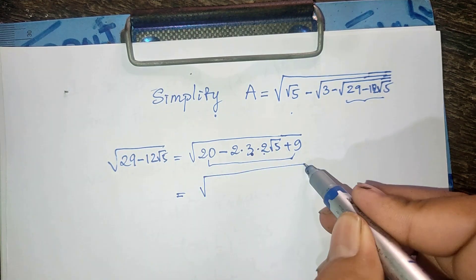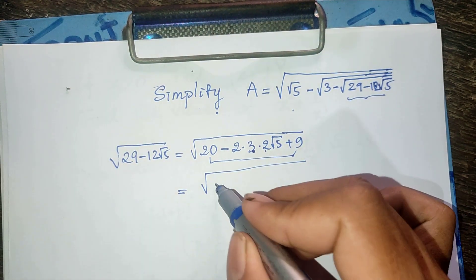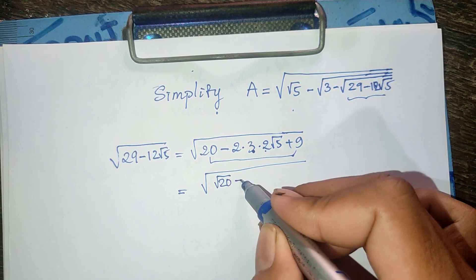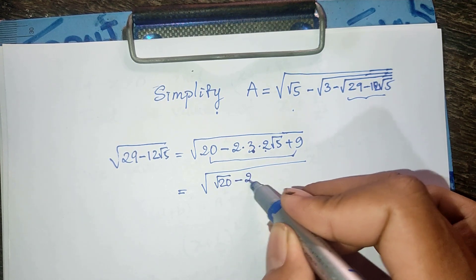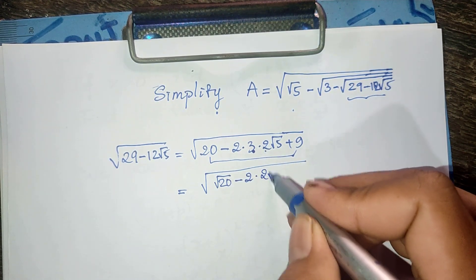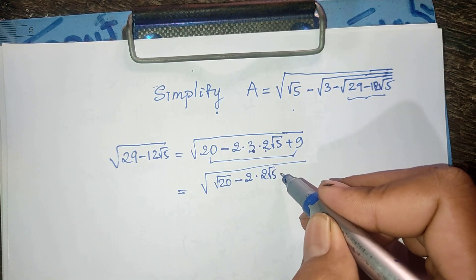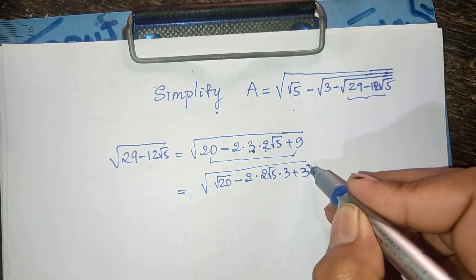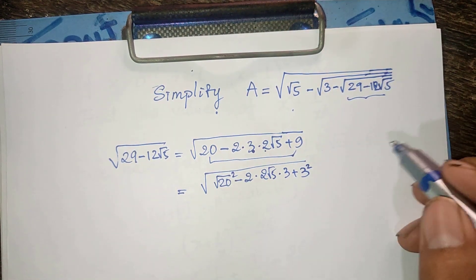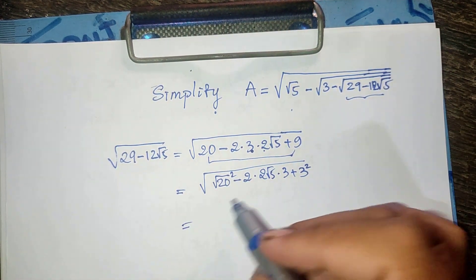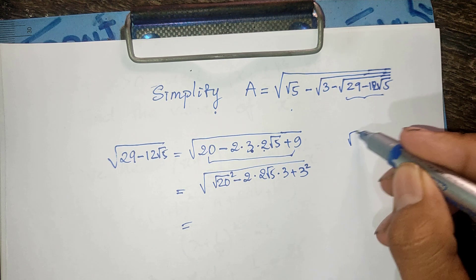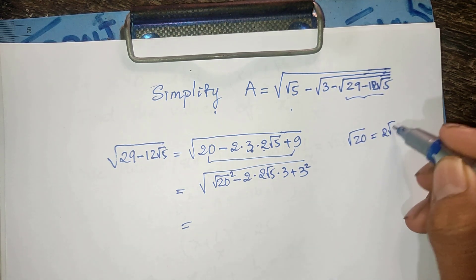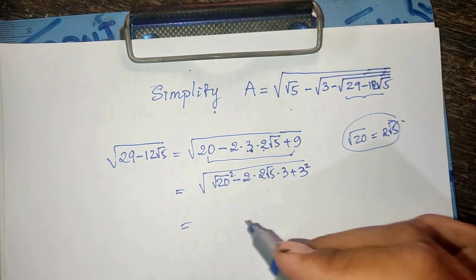I can write it equals square root of 20 minus 2 times 2 square root of 5 times 3, plus 3 squared. And note that square root of 20 is equal to 2 square root of 5.